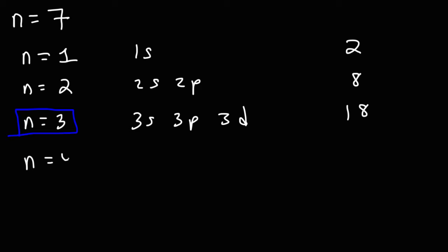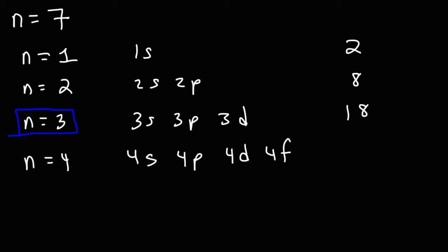In the fourth energy level, there are 4 sublevels: 4s, 4p, 4d, and 4f. f can hold up to 14 electrons. So if you add 18 plus 14, that gives you a maximum of 32 electrons in the fourth energy level.